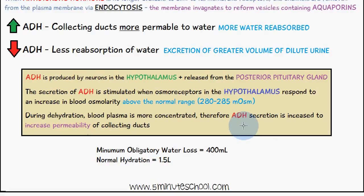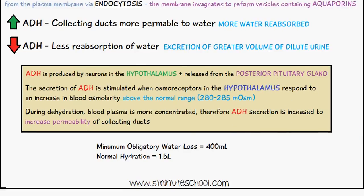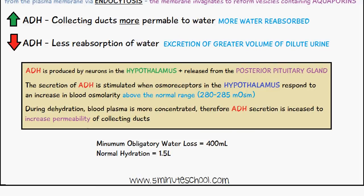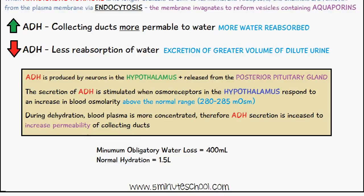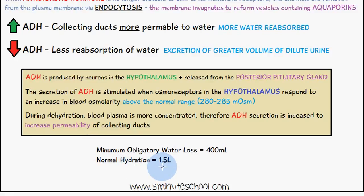During dehydration, blood plasma is more concentrated, therefore ADH secretion is increased to increase the permeability of collecting ducts. We also have minimum obligatory water loss, which is the minimum amount of urine needed to remove urea and various toxins. Even if dehydrated, the minimum obligatory water loss is 400 milliliters, while at normal hydration levels urine output is 1.5 liters.